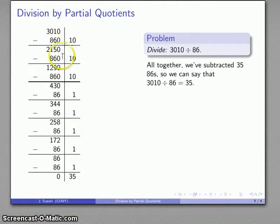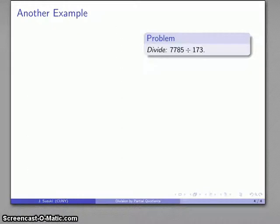Well, did I have to subtract 10 at a time? Not at all. If I had recognized that I could have subtracted 30 86s all at once, I could have done that as my first step. Now, recognizing that's a little bit more difficult. So let's see what we can do to get around that problem.